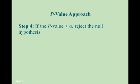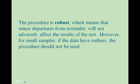Step four: if the p-value is less than alpha, we reject the null hypothesis. Step five: state the conclusion. The procedure is robust, meaning minor departures from normality will not adversely affect the results. However, for small samples, if the data have outliers, the procedure should not be used.